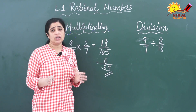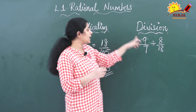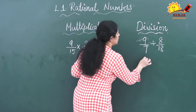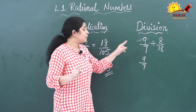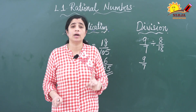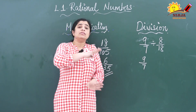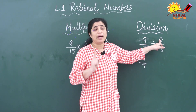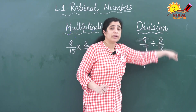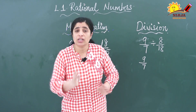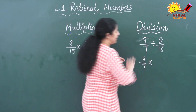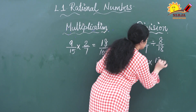Like this you have to do the multiplication. Now we will go to division. I have written the question: 9 by 7 divided by 8 by 18. For division, you keep the first number as itself and multiply it by the reciprocal of the second number. Reciprocal means interchanging the denominator and numerator. So the reciprocal of 8 by 18 is 18 by 8.